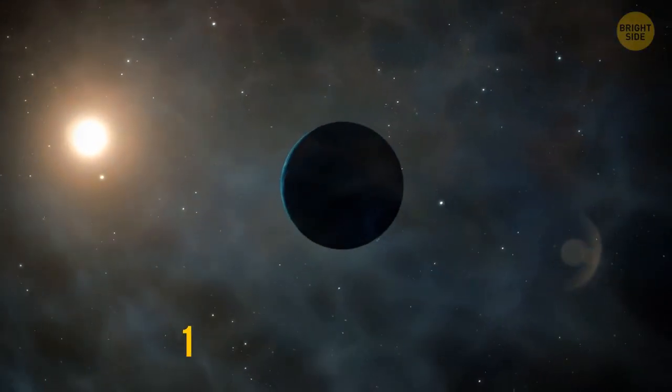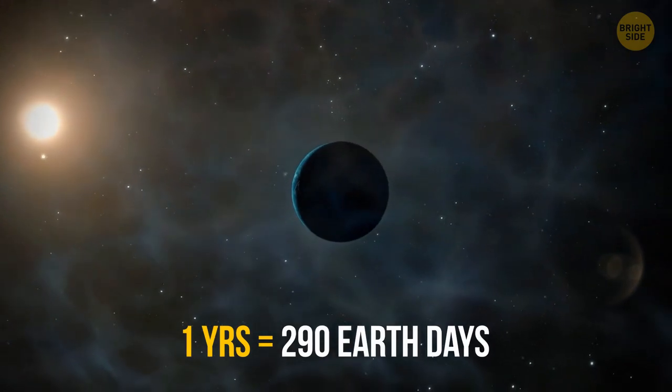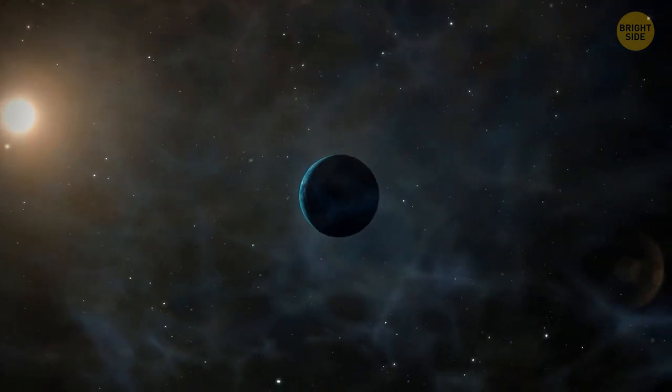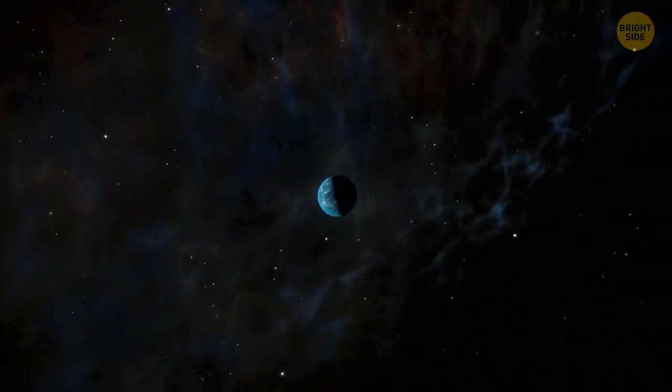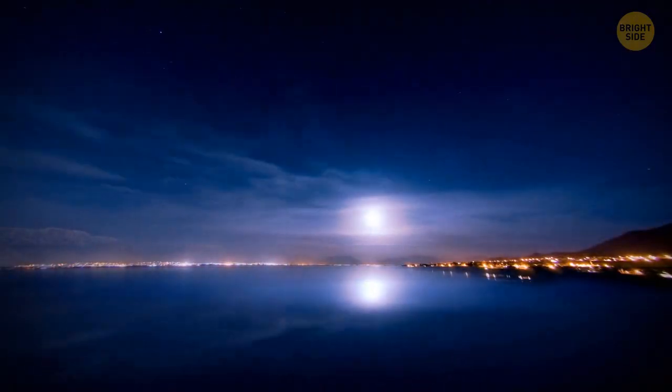And, finally, one year there is equal to 290 Earth days, about nine months. The planet has no natural satellites, so, unfortunately, we'd have to say goodbye to a beautiful view of the moon.